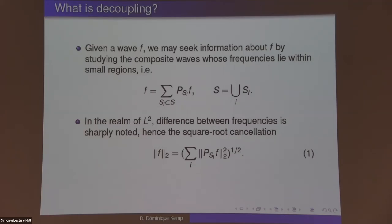Given a function F, a Schwartz function that we think of as a wave, we may seek information about F by studying the composite waves whose frequencies lie within small regions. Essentially, we're doing a function decomposition in terms of various Fourier projections.